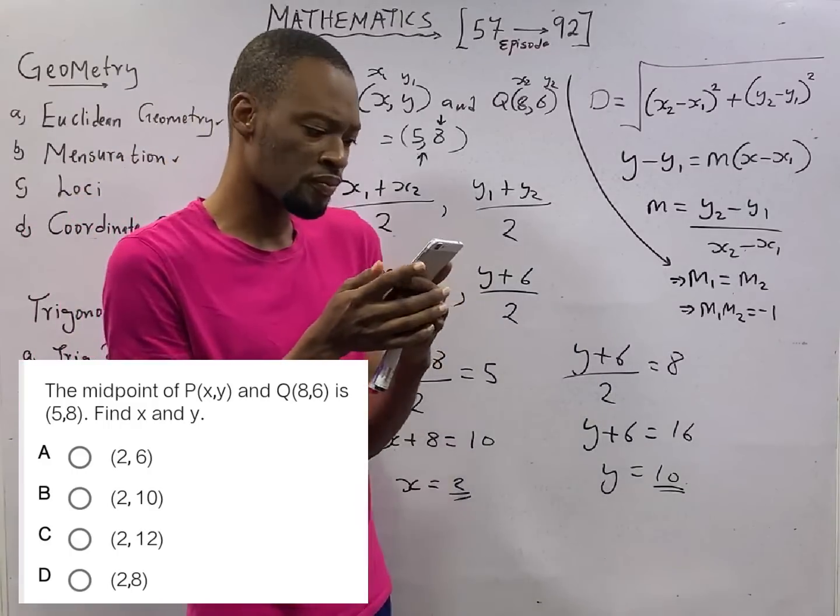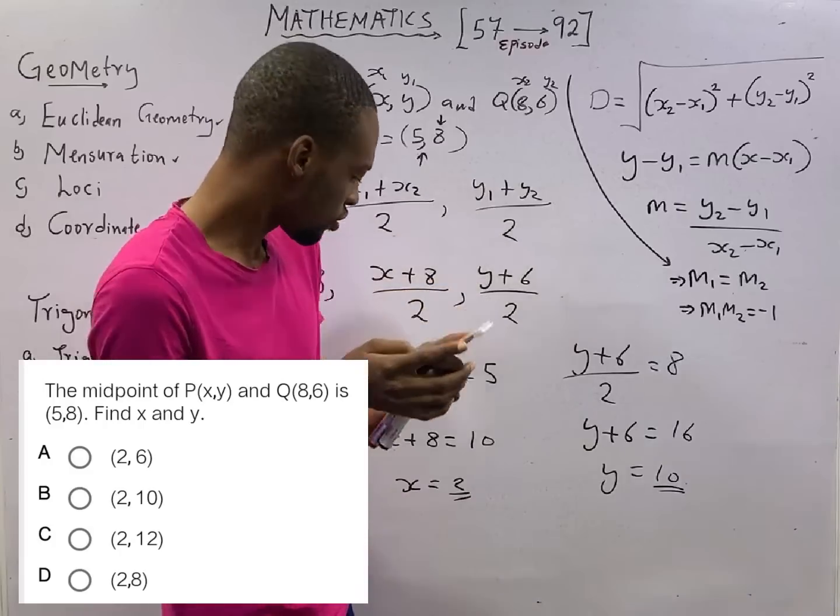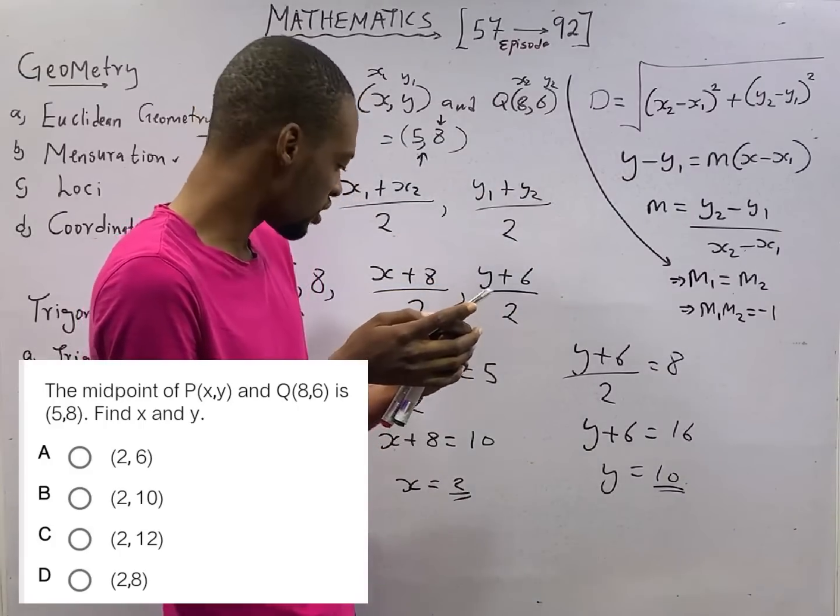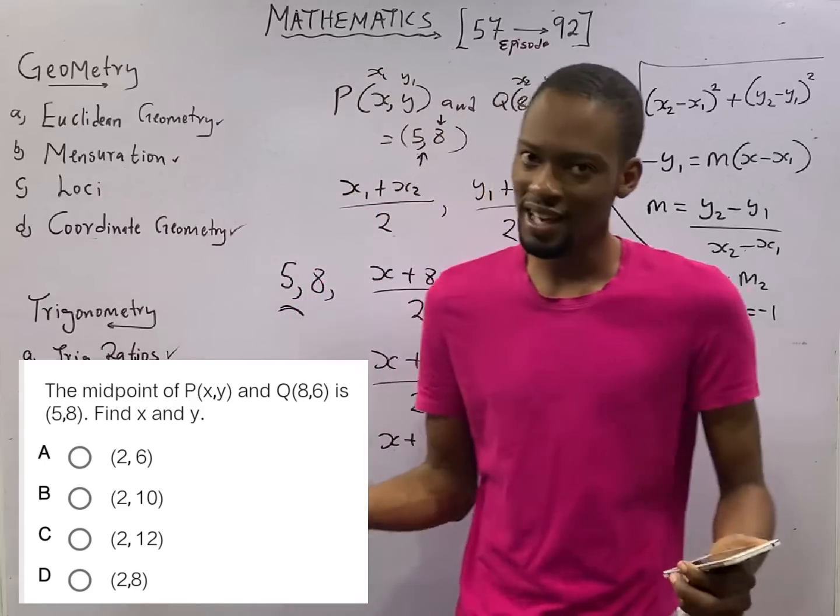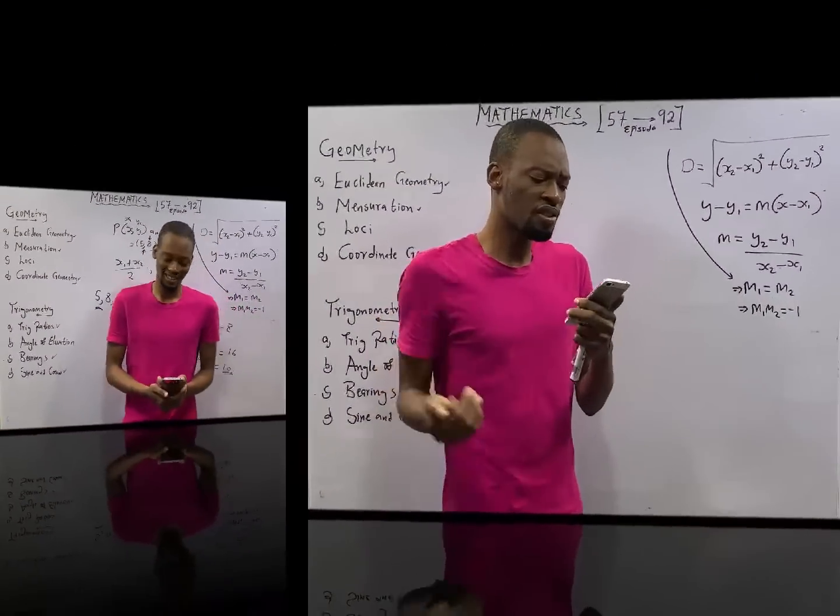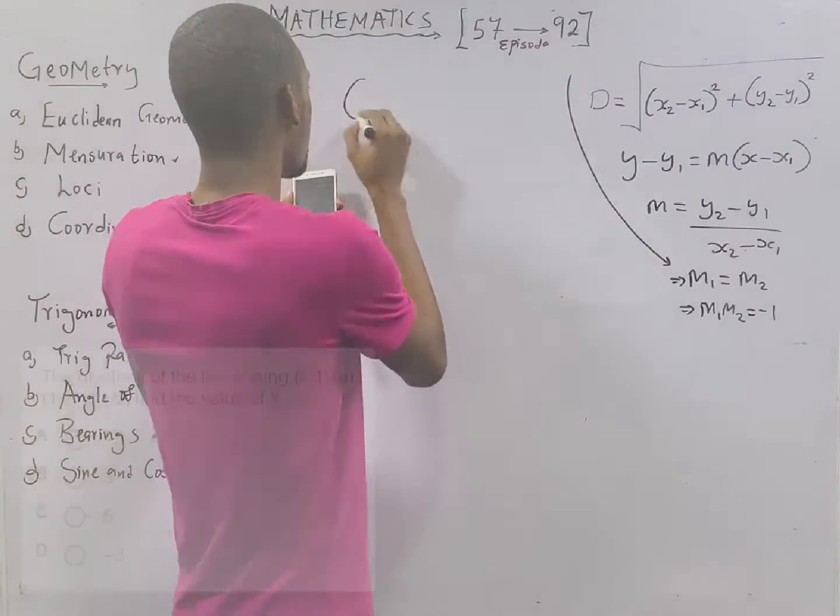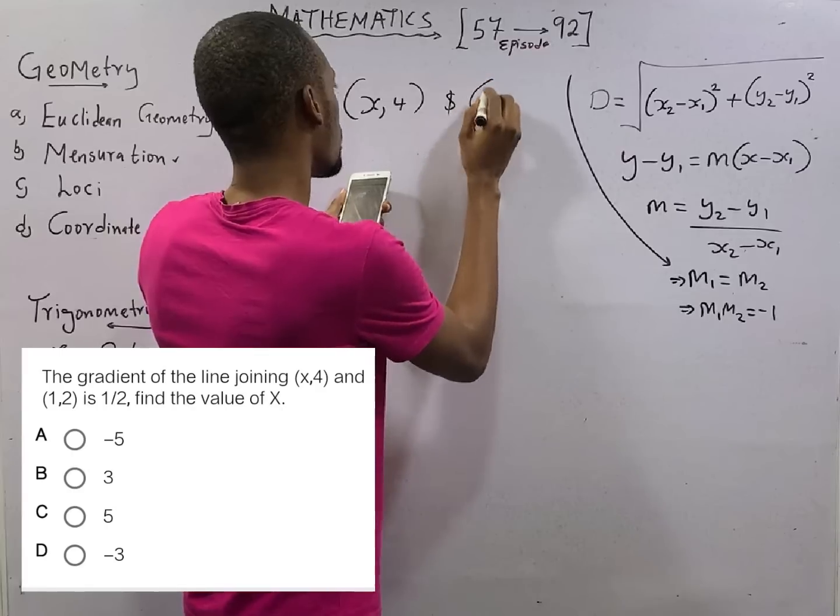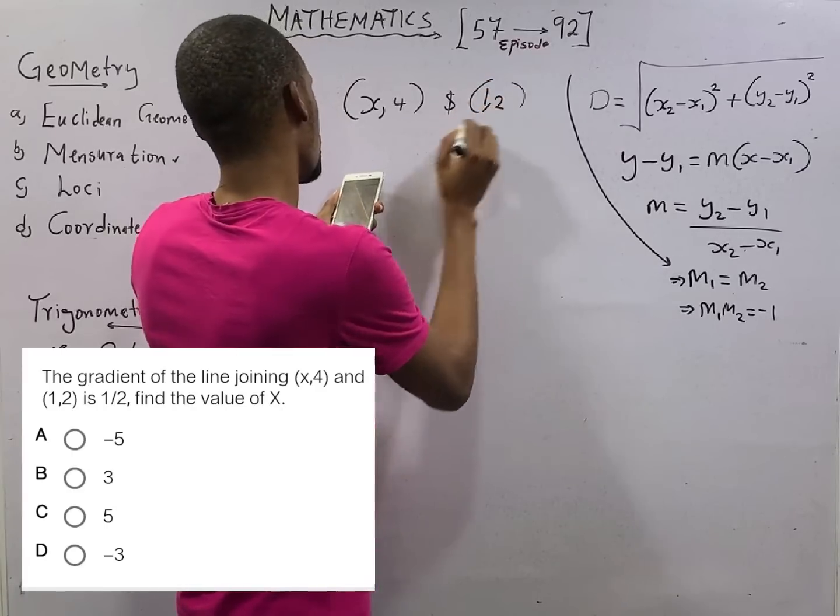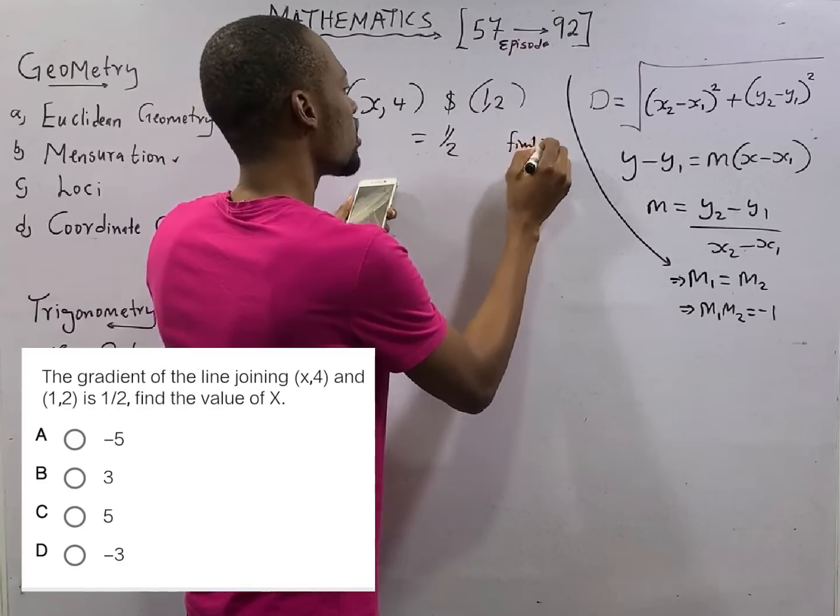Ladies and gentlemen. The gradient of the line joining the coordinates (x, 4) and (1, 2) equals 1/2. Find x.